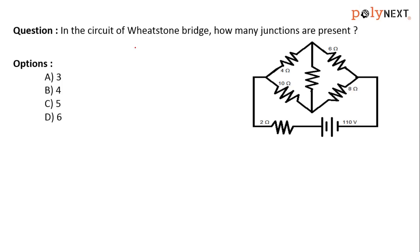In the circuit of Wheatstone Bridge, how many junctions are present? Options are 3, 4, 5, and 6.